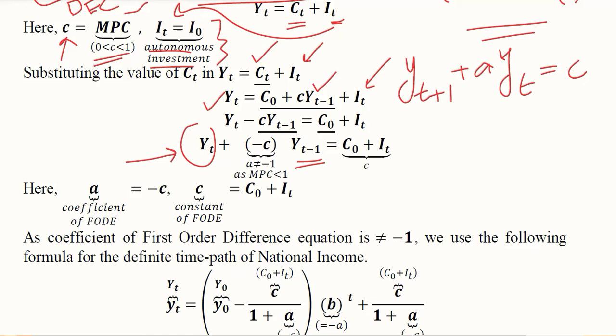We have transformed this equation by introducing +1 in the subscript. It is now at par with the standard form. Instead of small yt, we have capital Yt, and the subscripts are now in accordance with the standard form.